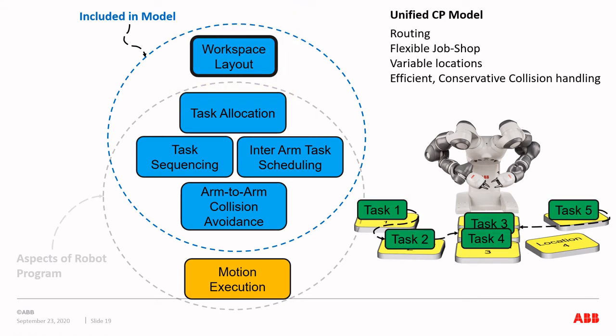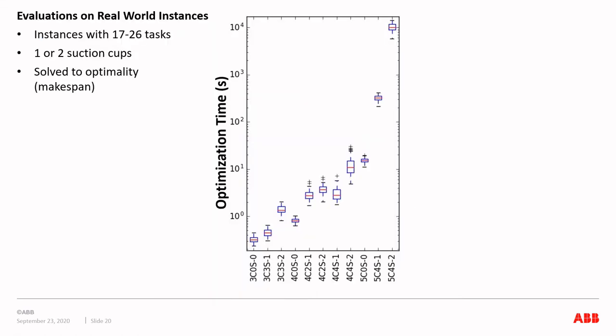The result of this work is a unified CP model with the four most high-level aspects of robot programming plus workspace layout optimization. The five aspects are heavily interconnected and greatly benefit from joint solving. As an example, the choice of location for a task affects the feasibility of task allocation, since the location might be out of reach for one arm or violate collision avoidance constraints. The choice of location also affects travel times, which in turn affects arrival times and hence the scheduling.